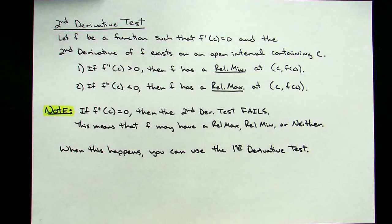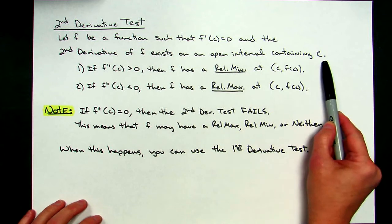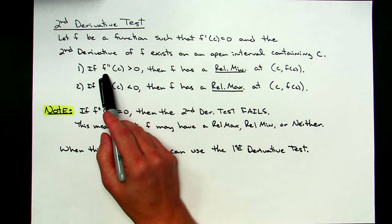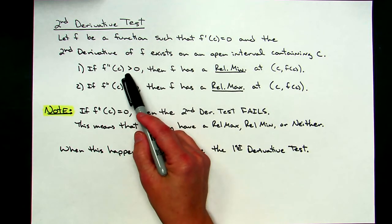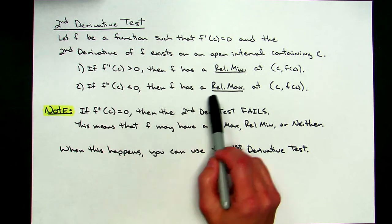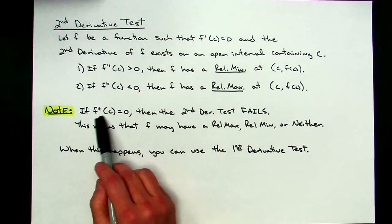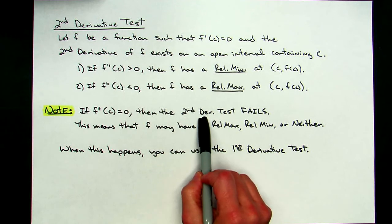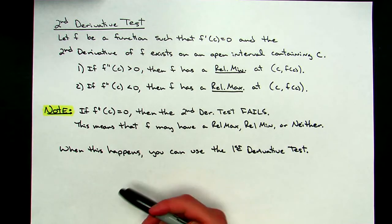Today we're going to be taking a look at the second derivative test. We're going to let f be a function such that f prime of c equals zero and the second derivative of f exists on an open interval that contains c. If we test our value of c in our second derivative and it turns out to be positive, then f has a relative minimum at x equals c. If the second derivative at c is less than zero, then f has a relative maximum at x equals c. If the second derivative at c is exactly equal to zero, then your second derivative test fails — f could have a relative maximum, relative minimum, or neither, and you have to do some other investigation to find out what is really going on.